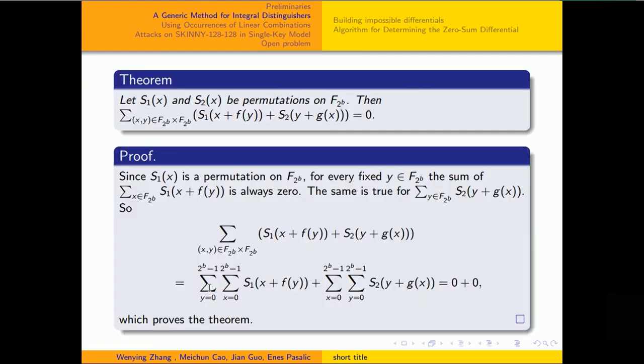Our integral distinguisher is based on the following theorem. Let S1 and S2 be permutations. Then the sum of this formula over this set is zero. Let's divide the sum into two parts. In the first part, we take sum over x first and then for y. In the second part, we take the sum in another order, that is y first and then x. The inner sums are all zeros which proves the theorem.